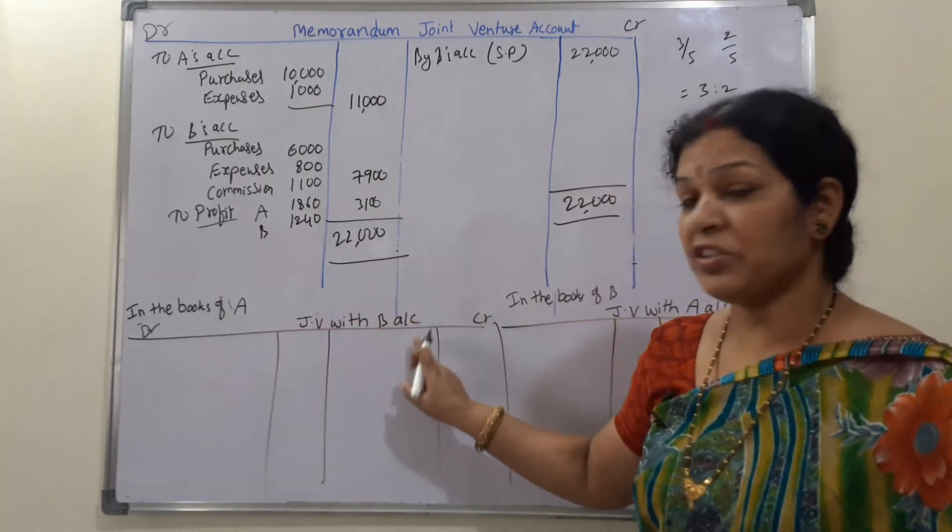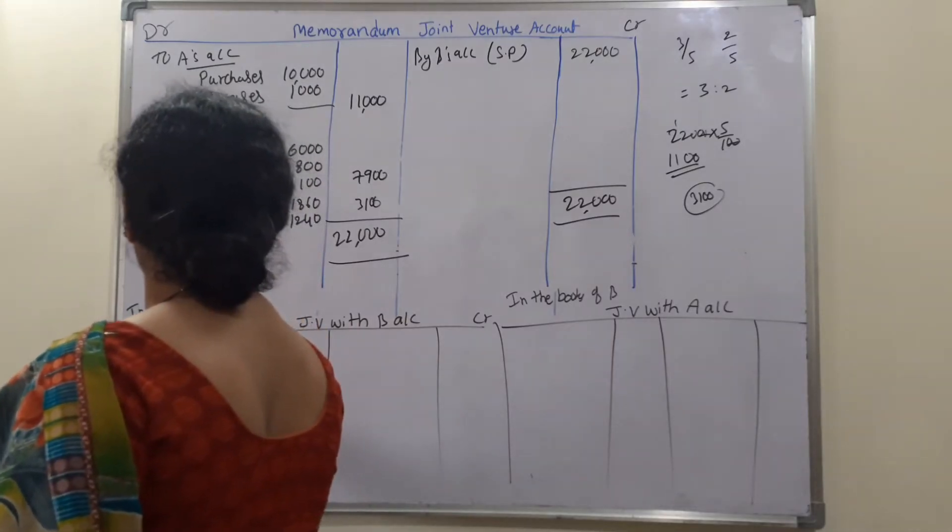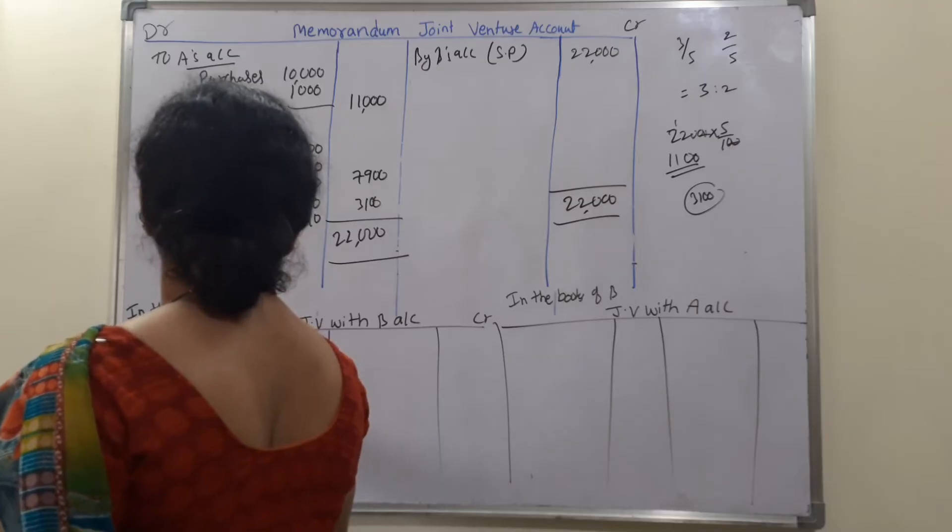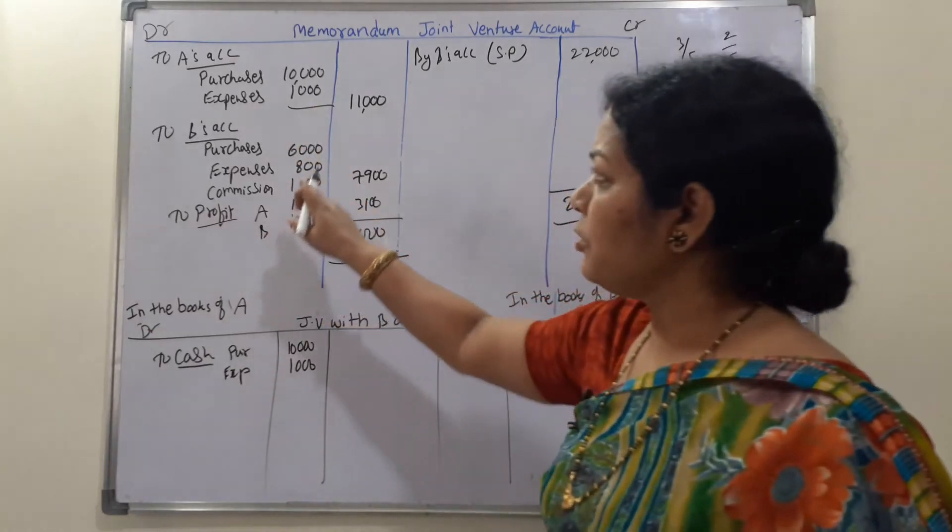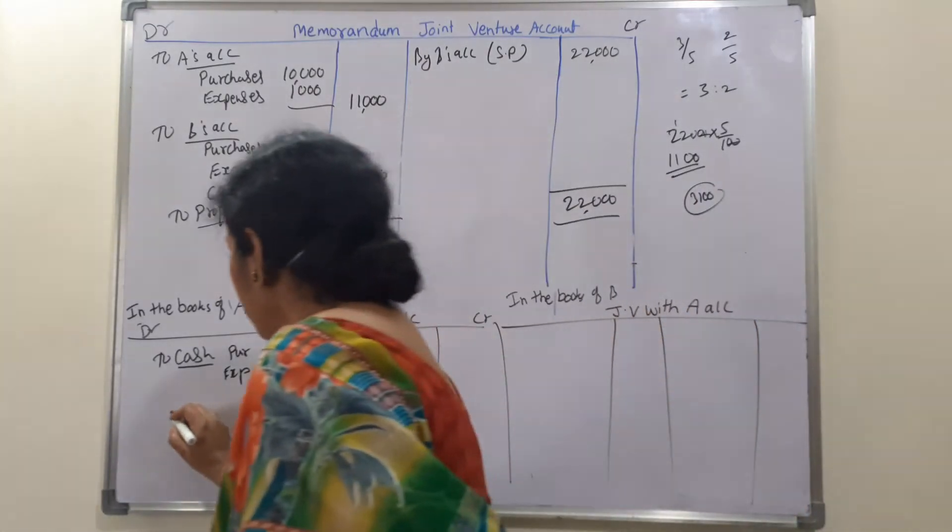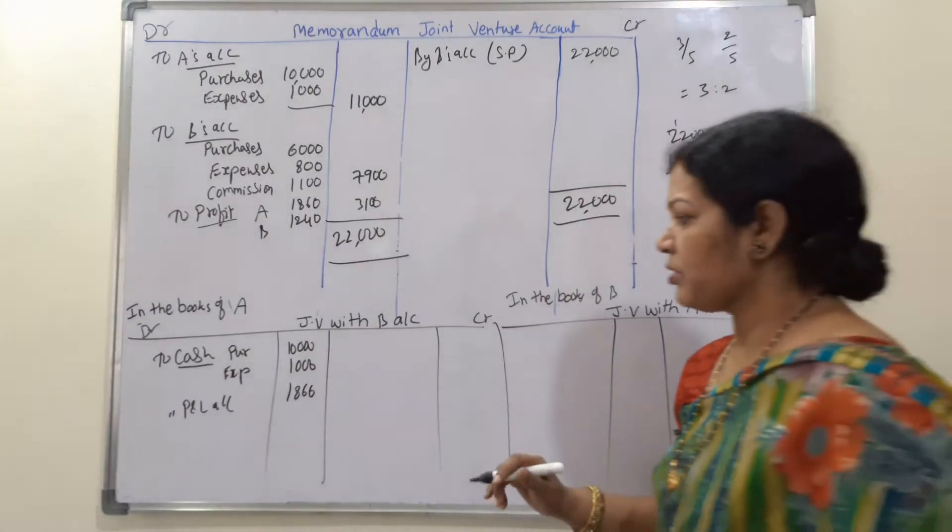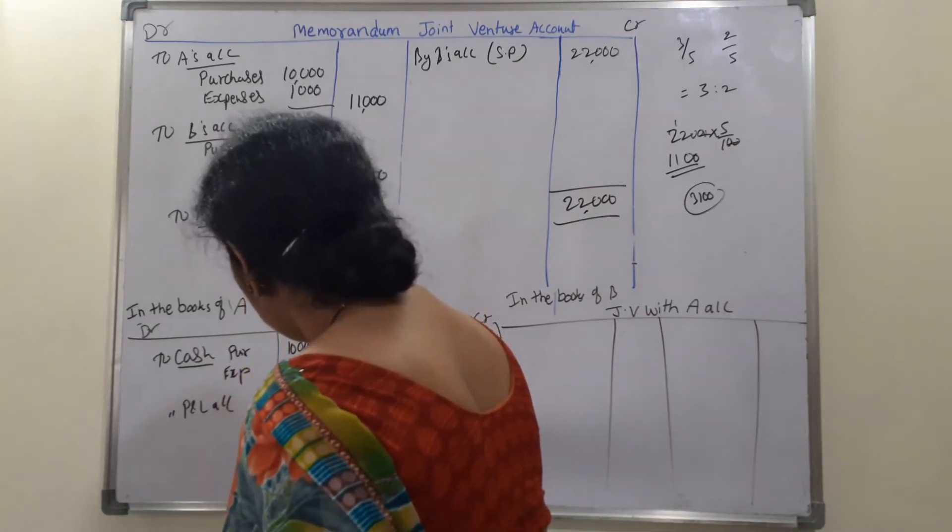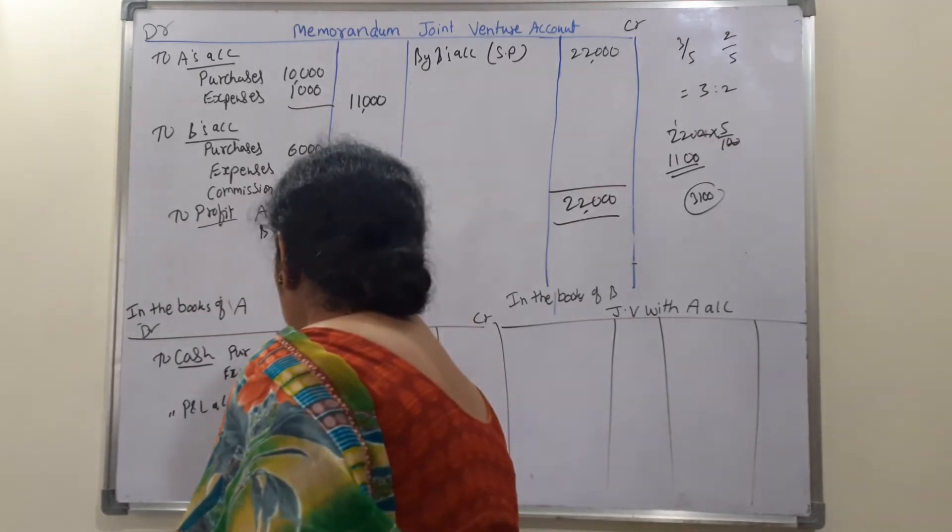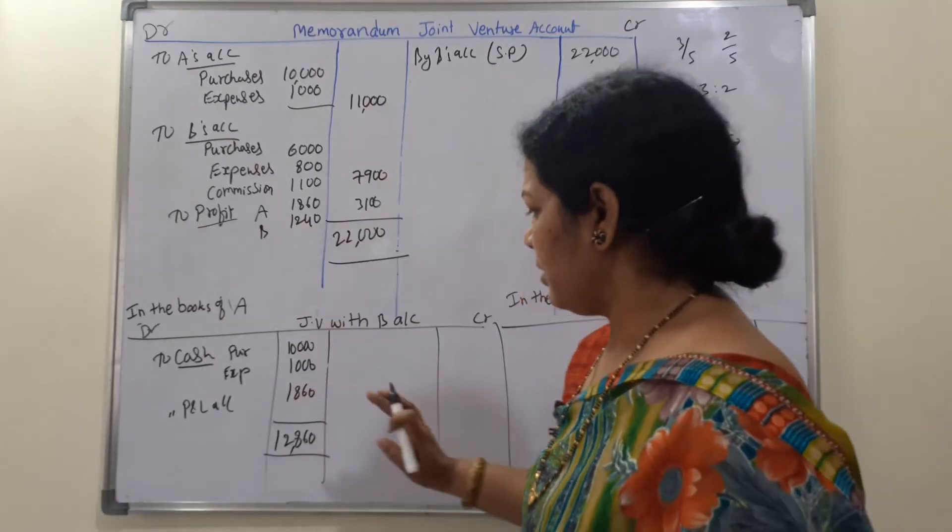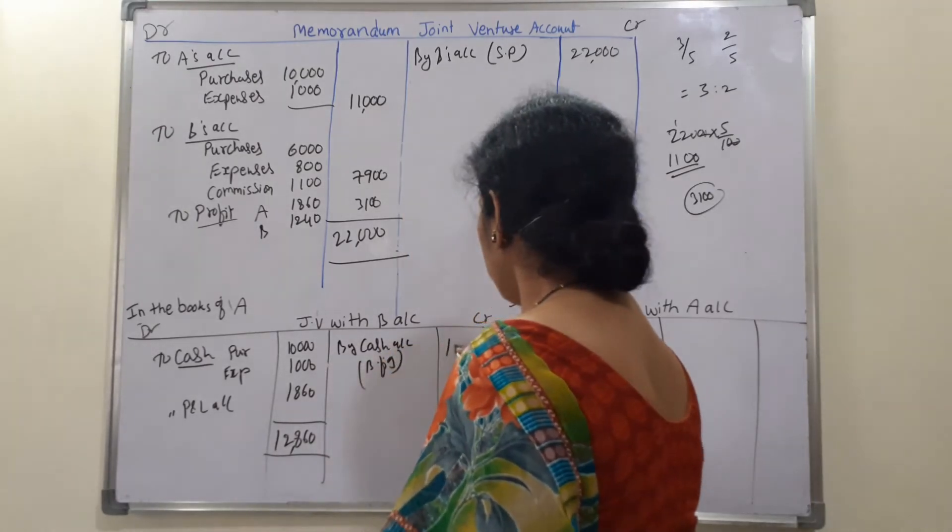Now after that we will go for in the books of A joint venture with B's account. In the books of A means A's transactions only we are going to write. So A's transactions will say to cash, you can say purchases 10,000 and 1,000. Anything else related to A's? Here profit is there, so to profit and loss account 1,860. Credits have nothing there, so we will close the account. This is 860, 10,000, 11,000, 12,860. So balance is by cash account, this is the balancing figure, 12,860.